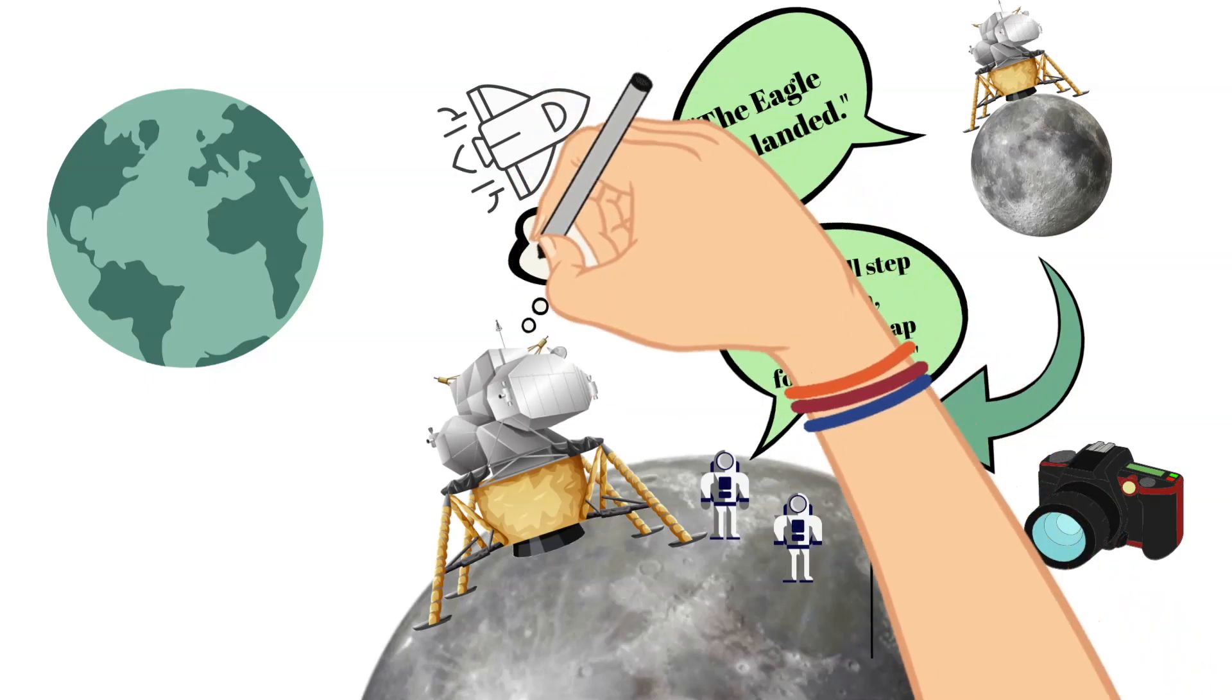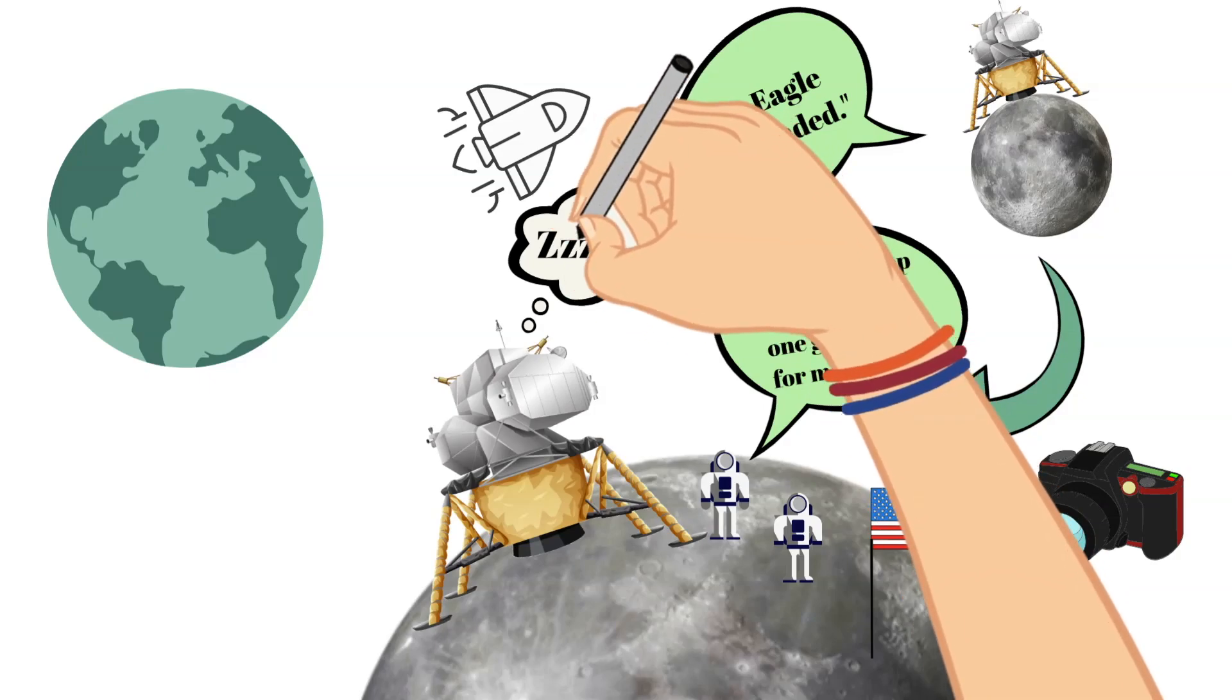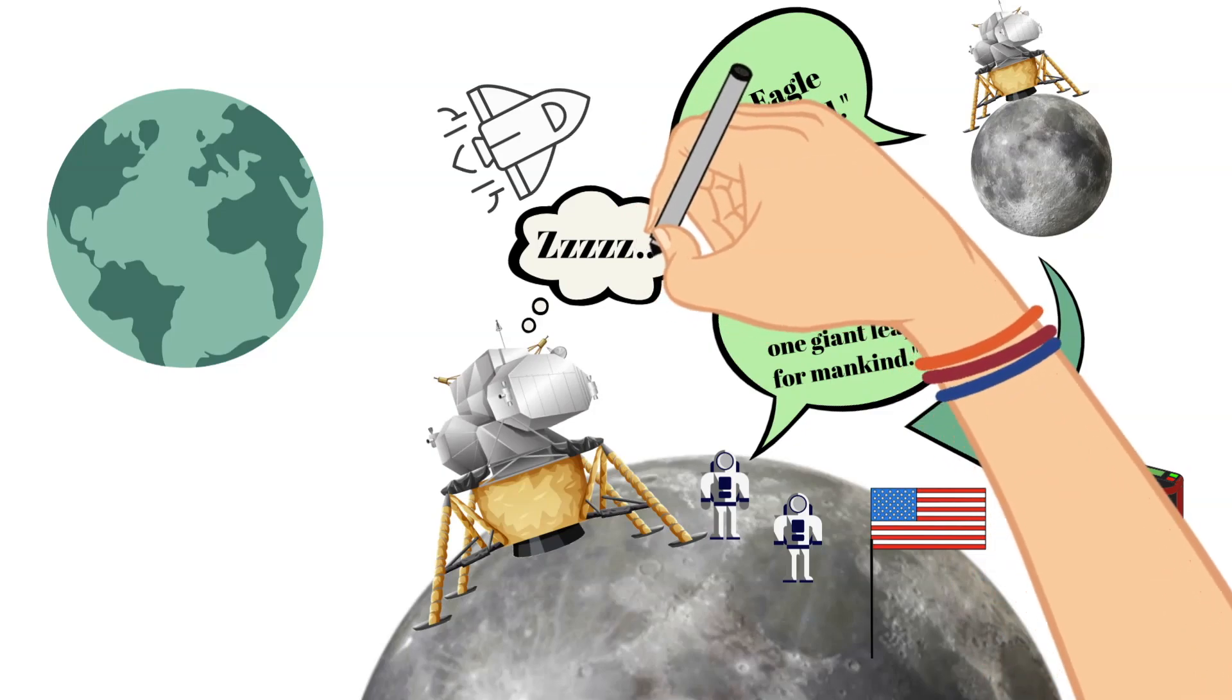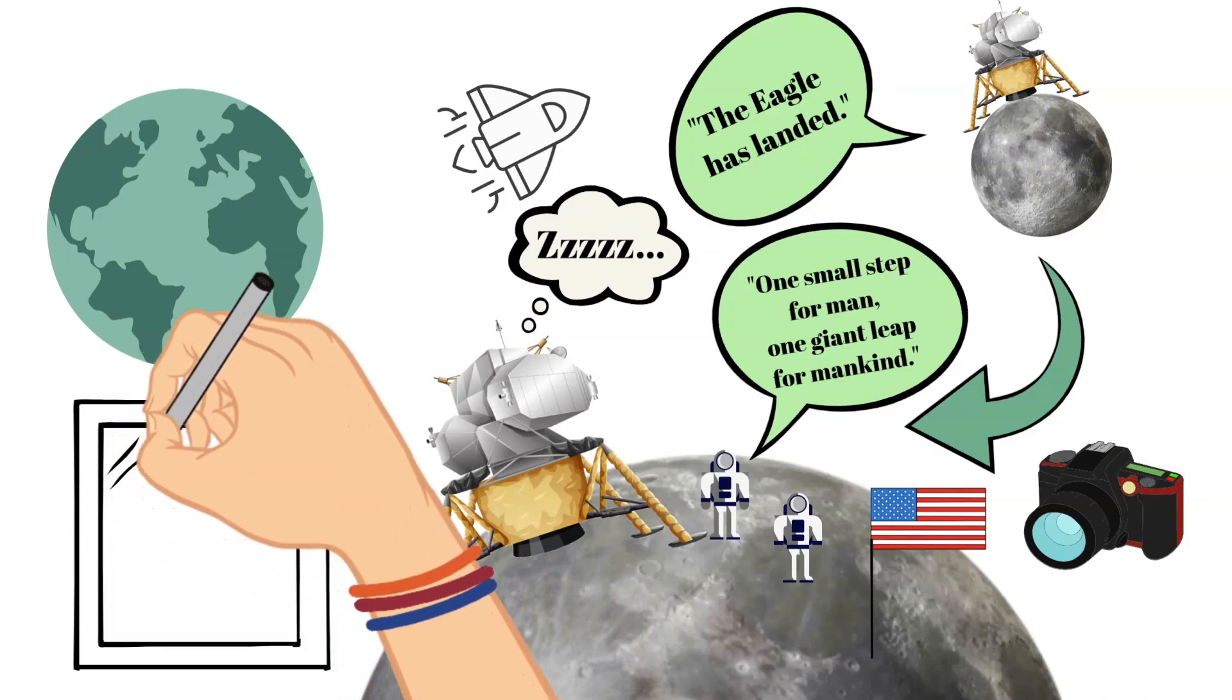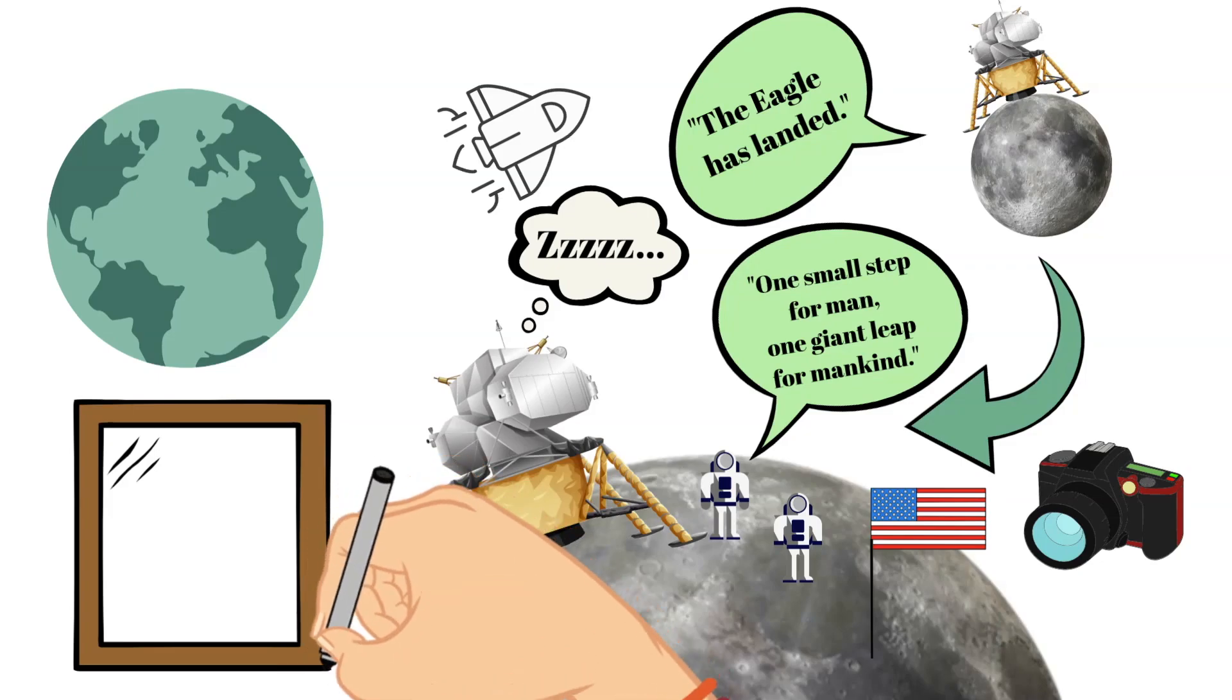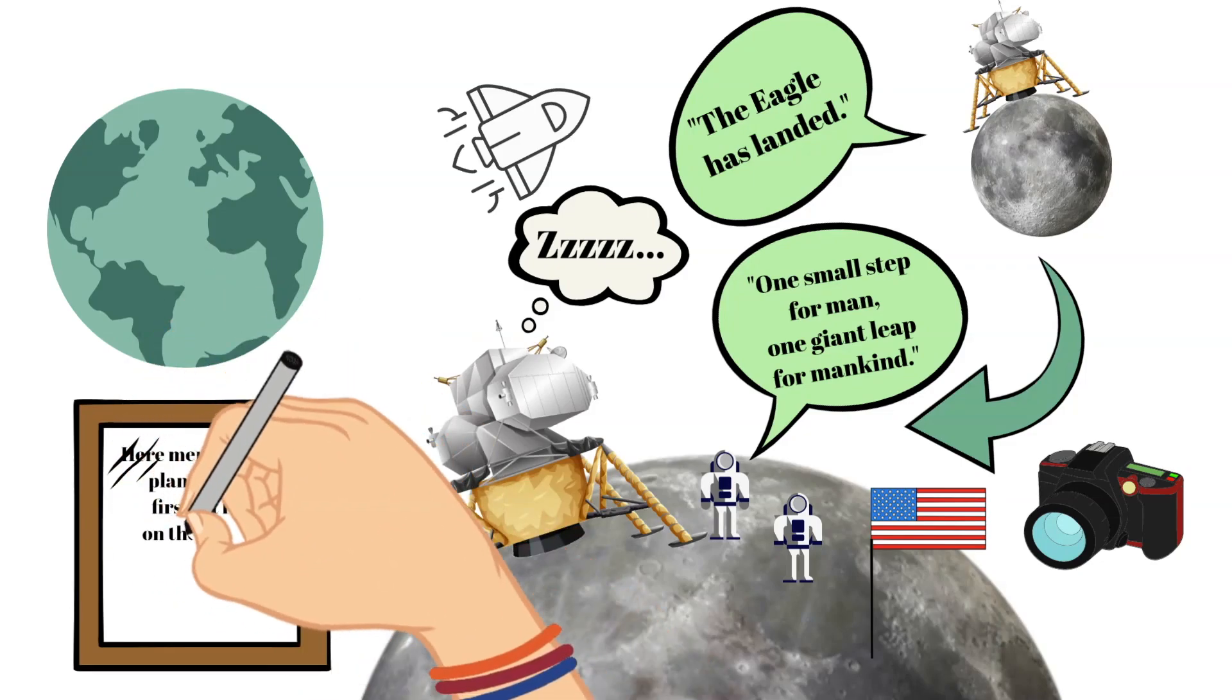The afternoon of July 21st, the lunar module named the Eagle began its journey back to the command module. They left several items on the moon, but one that is interesting was a plaque that read, 'here, men from the planet earth first set foot on the moon, July 1969 AD. We came in peace for all mankind.'